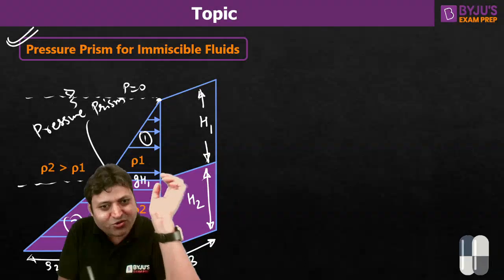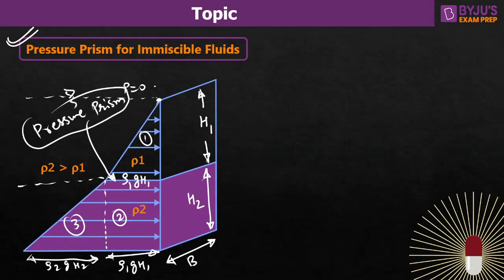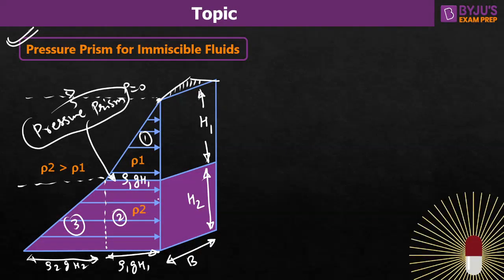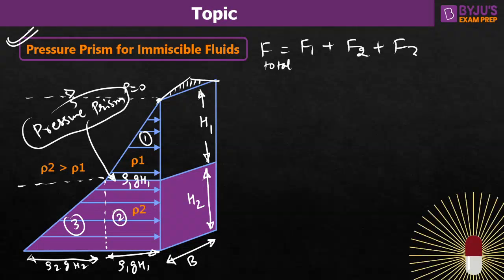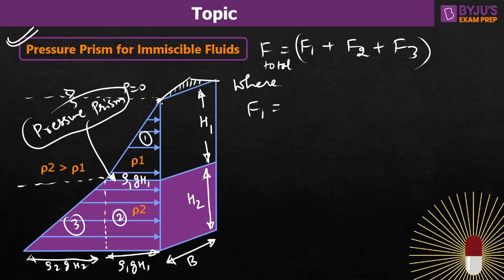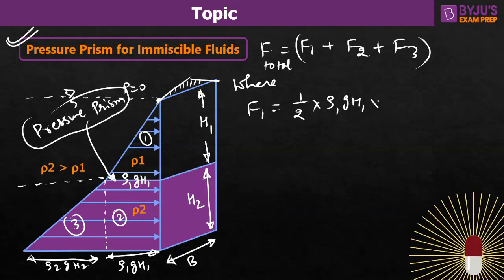We can divide the whole pressure diagram into three figures: 1, 2, and 3. The widths are rho_1·g·H1 for the top triangle, rho_1·g·H1 for the rectangle, and rho_2·g·H2 for the bottom triangle. The depth of the pressure prism equals the width of the surface. The total hydrostatic force equals F1 + F2 + F3. F1 is the volume of pressure prism 1 — it is a triangle, so half into base rho_1·g·H1 into height H1 into depth B.